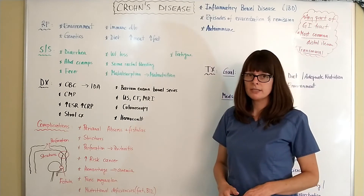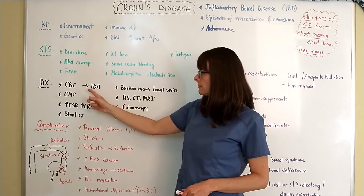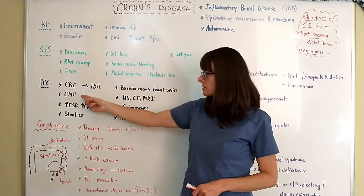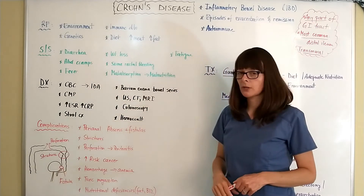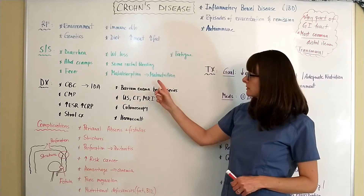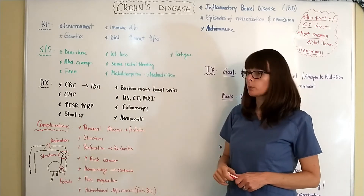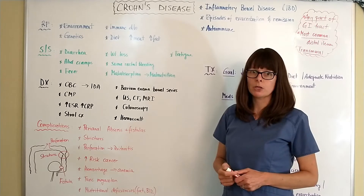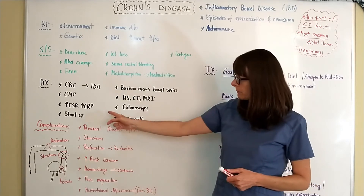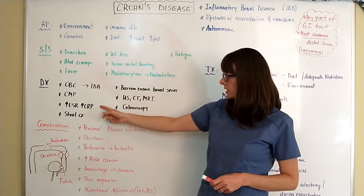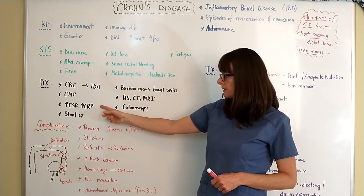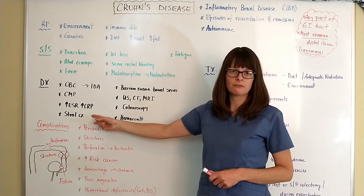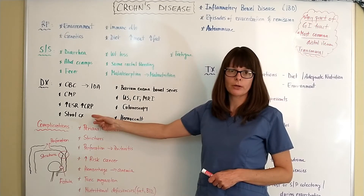For diagnostic criteria, on a CBC the patient will often show iron deficiency anemia. On a CMP, there can be electrolyte imbalances. Because of malabsorption and malnutrition, albumin levels will frequently be low in patients with Crohn's disease. Inflammatory markers ESR and CRP will be elevated. Stool cultures may be needed to rule out an underlying infectious process causing the patient's symptoms.